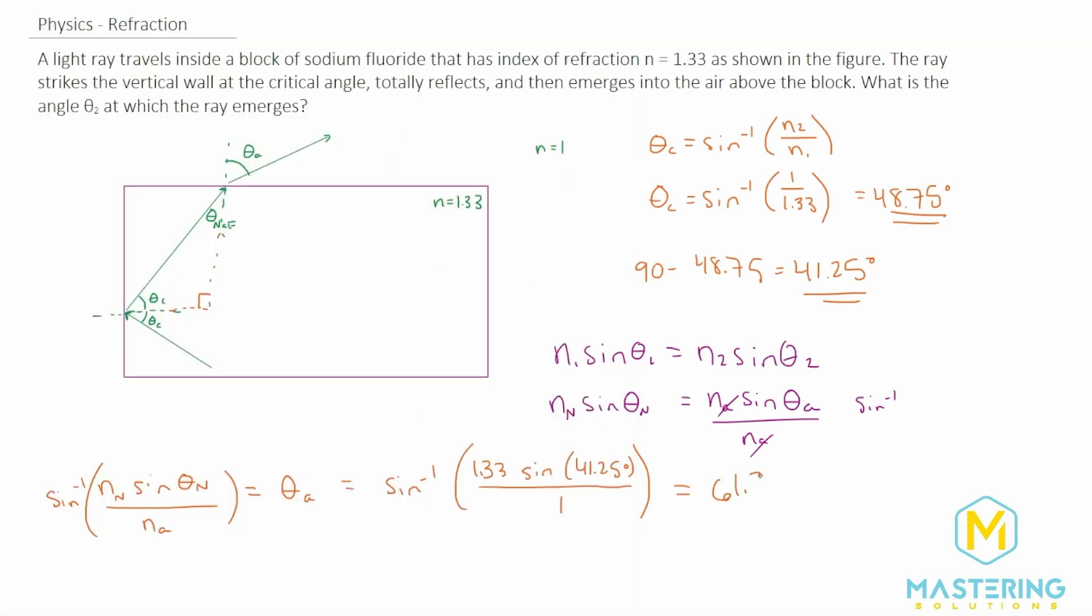So 61.3 degrees. And so that's the angle using Snell's law and total internal reflection that the light ray will exit the block from the normal out to the ray is 61.3 degrees.